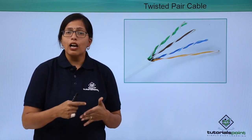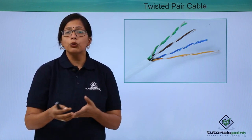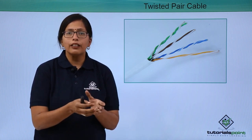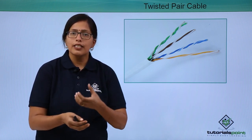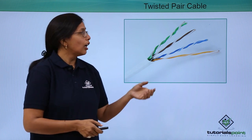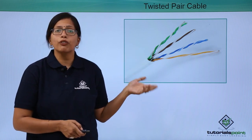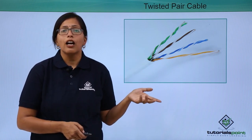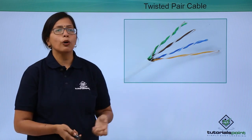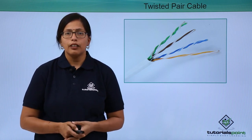So now we can have more than two copper wires put together on a single sheath. In fact, up to 25 pairs of copper wires are put together in a single sheath to form the twisted pair cable.